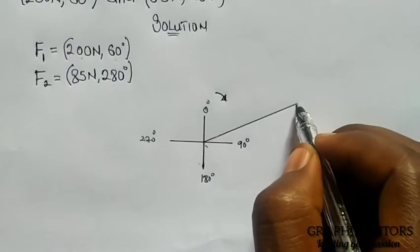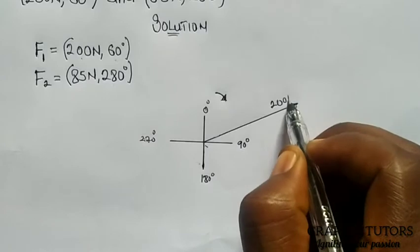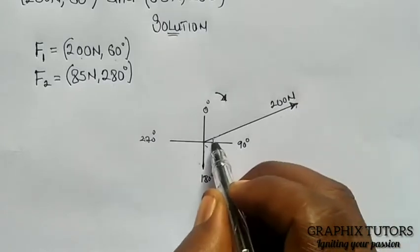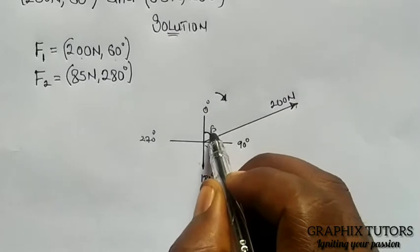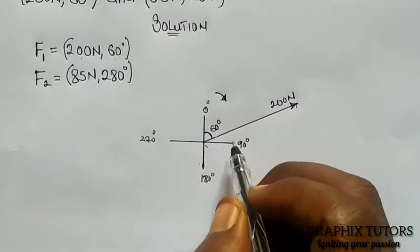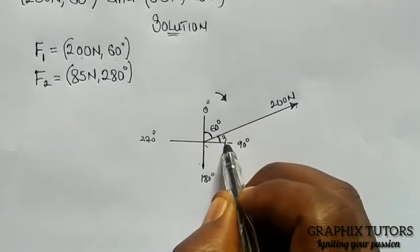So the magnitude here is 200 Newton. And the angle that it forms to this point is 60 degree. Now if you subtract 60 from 90, you will be left with 30 degree.